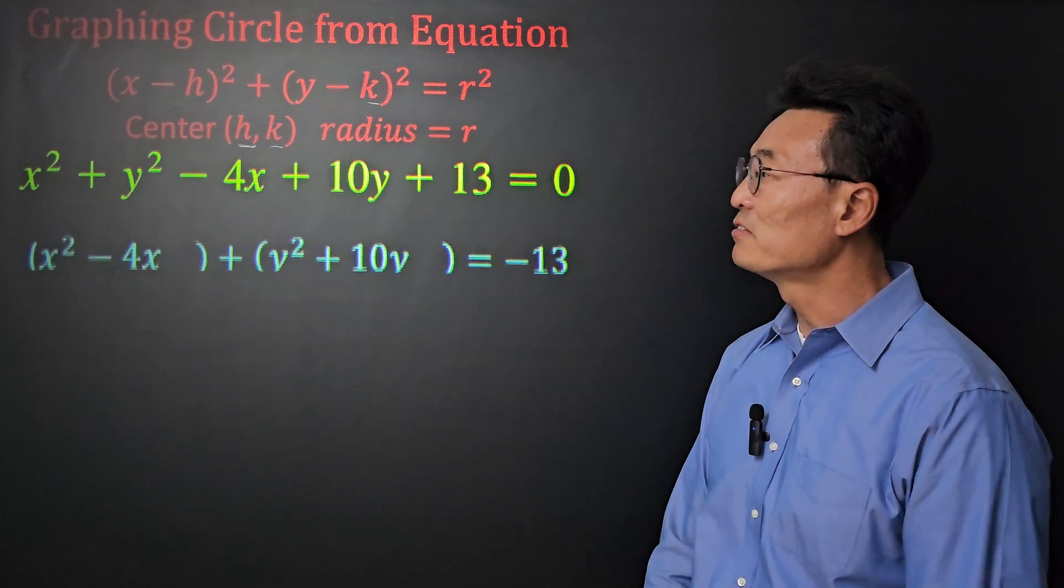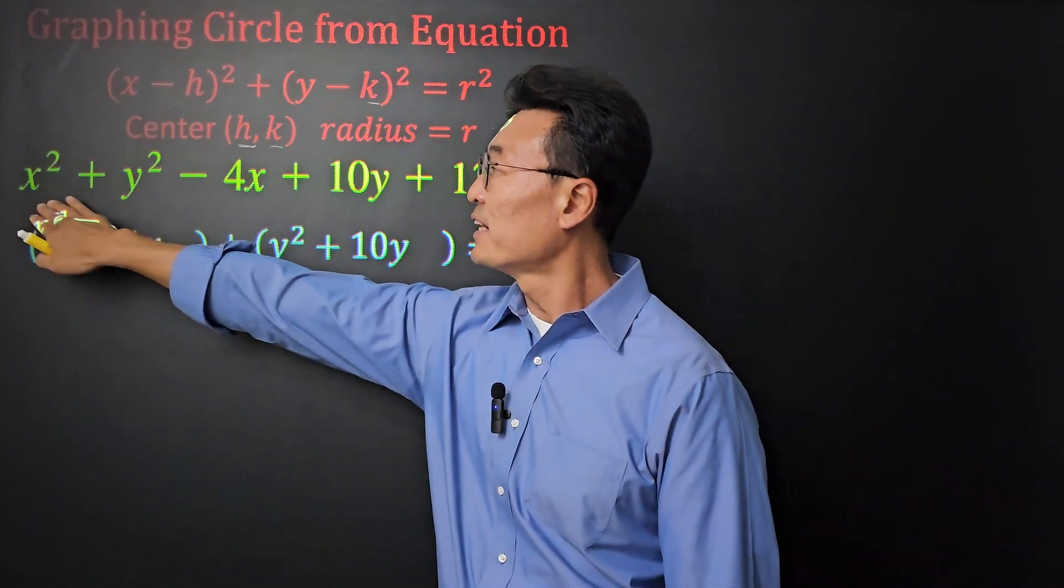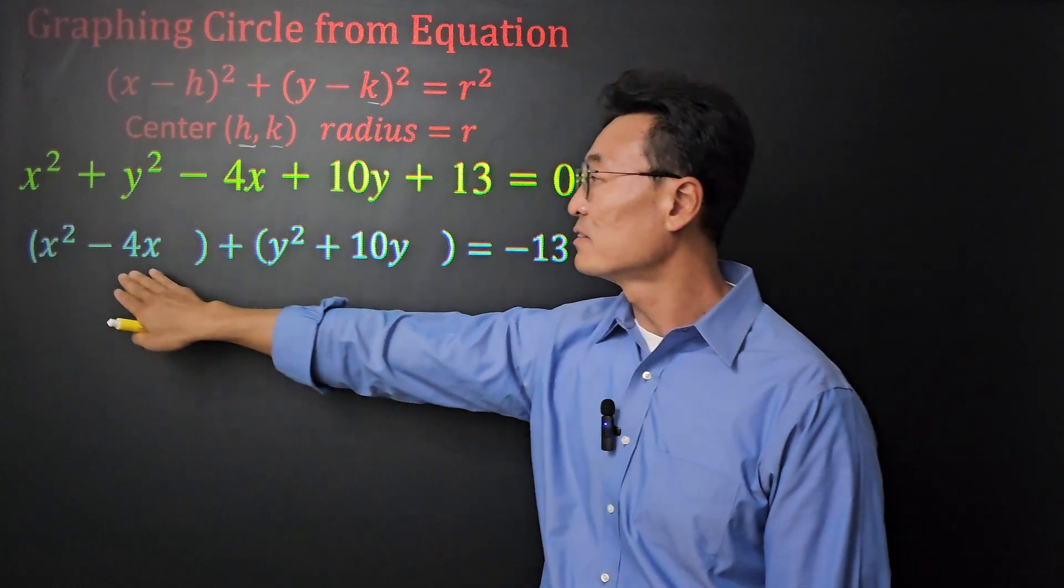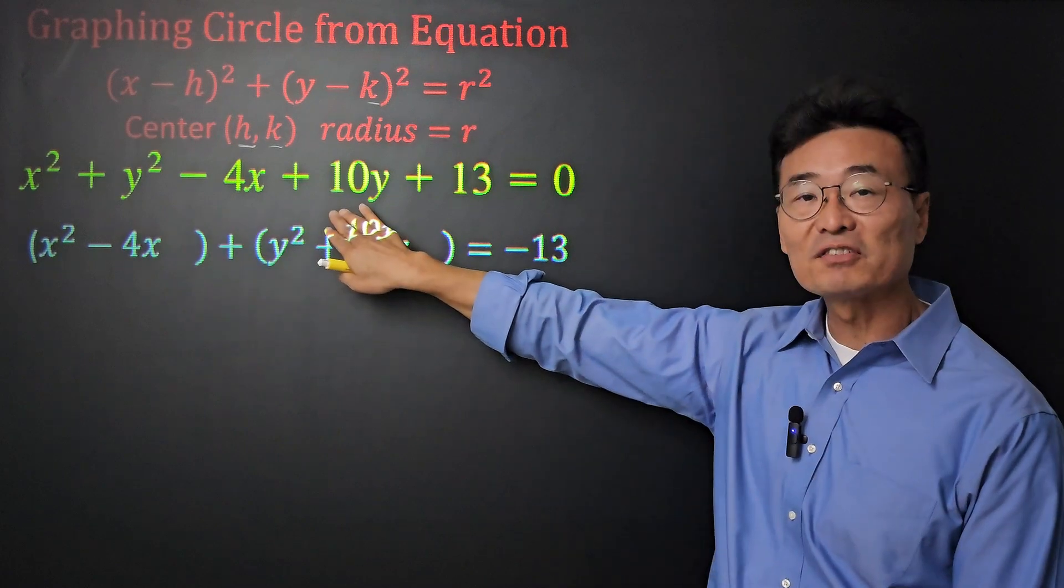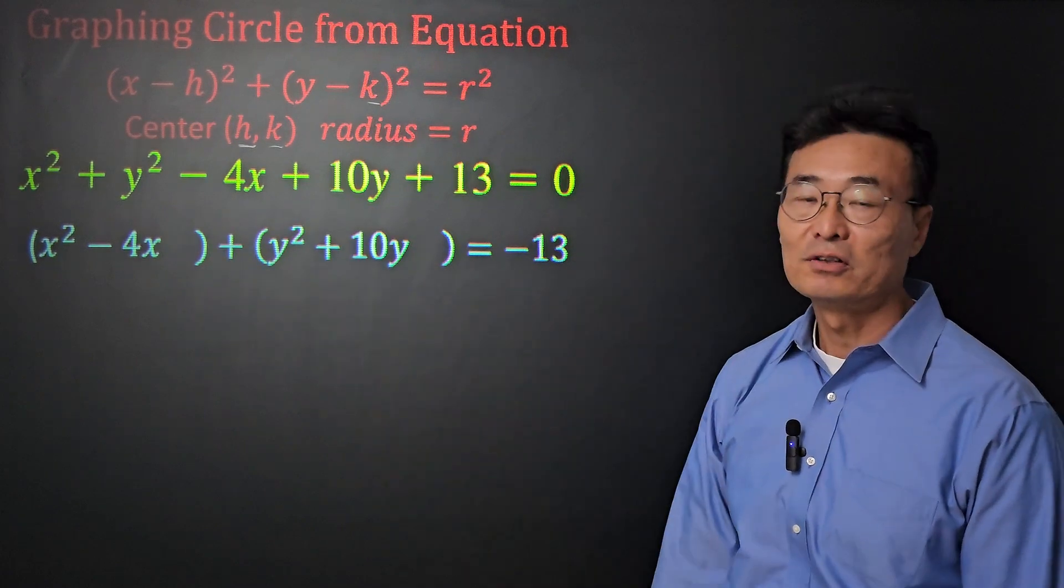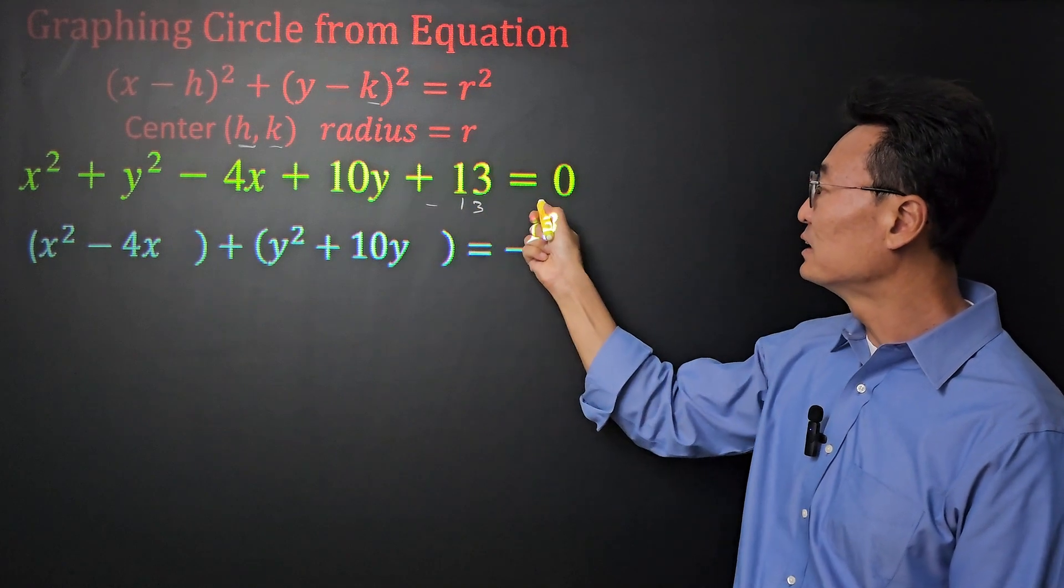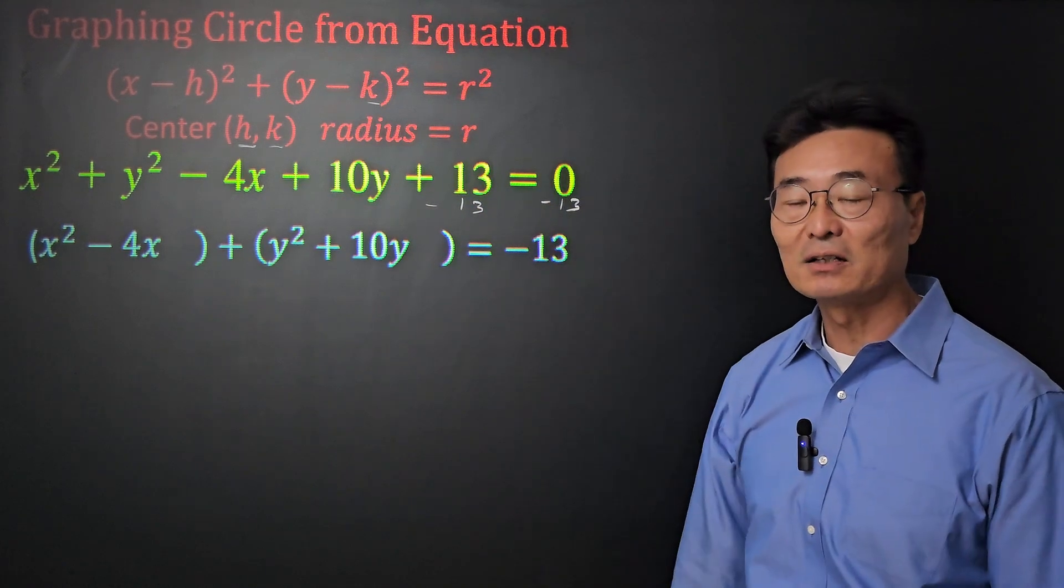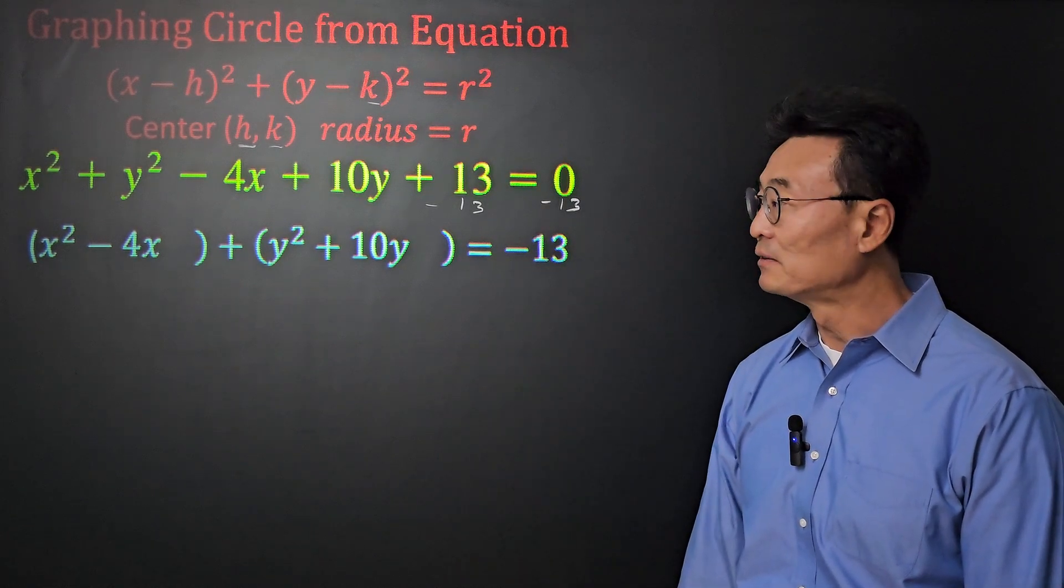To do that, first thing we're going to do is group the x's together in the parentheses. Notice the x squared and the minus 4x is in this parentheses, and then the y squared and the plus 10y is in the other set of parentheses. And also, we subtract the 13 from the left and the right side of the equal sign, so we have the negative 13 on the right side of the equal sign.